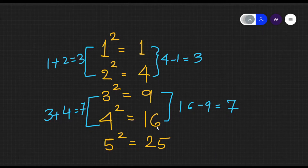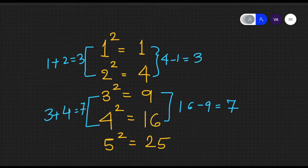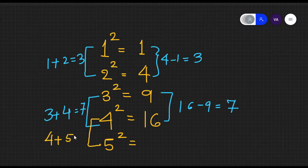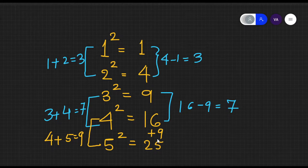So after knowing this fact, how is it useful for us? Let us assume we do not know the square of 5, but we know that 4 squared is 16. You just add 4 plus 5, which equals 9, and add that to 16. So 16 plus 9 is 25. You are adding 9 because 25 minus 16 equals 9, which is the sum of 4 and 5.